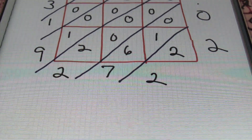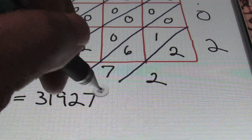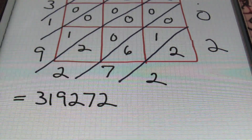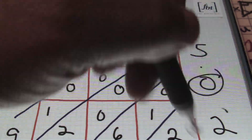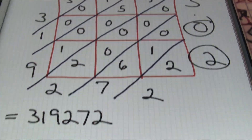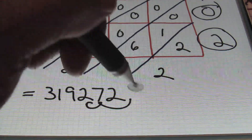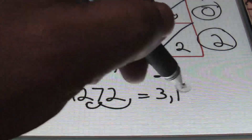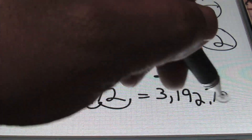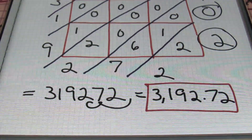Writing down all the values for the answer: three, one, nine, two, seven, and two. We had two places behind the decimal originally, so starting from the furthest right digit, I move the decimal over one, two places to get a final result of 3,192.72. That's the answer, ladies and gentlemen, to problem number four.